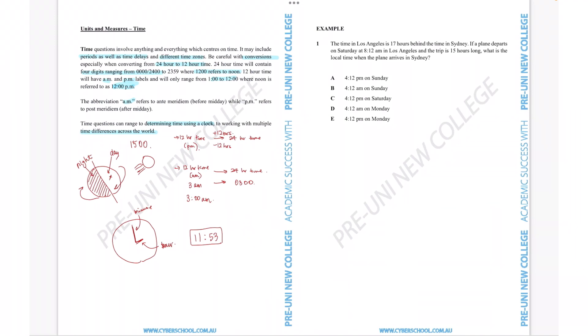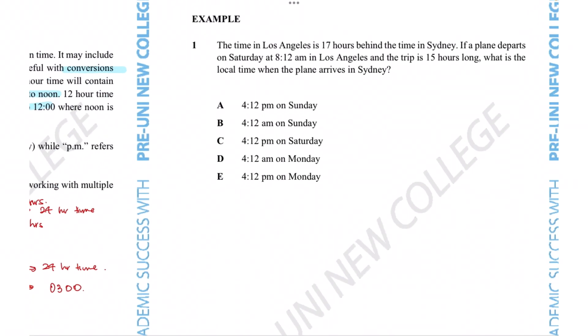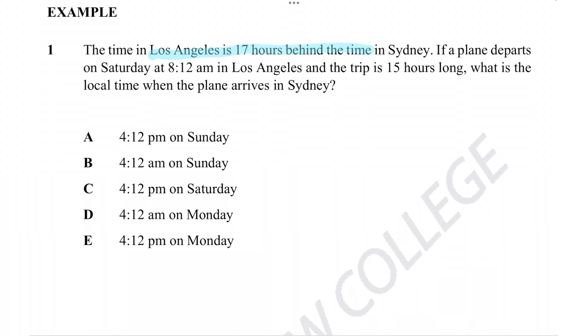Now let's look at an example question. The question says: the time in Los Angeles is 17 hours behind the time in Sydney. A plane departs on Saturday at 8:12 AM in Los Angeles and the trip is 15 hours long — what is the local time when the plane arrives in Sydney? For time zone questions, it's easiest to work with one local time, do all the calculations, and then convert at the end, so you only perform the time zone conversion once.